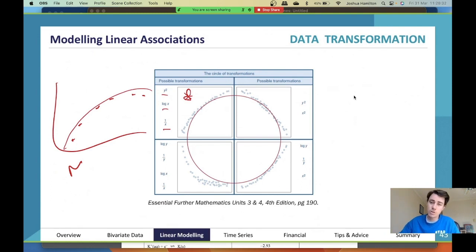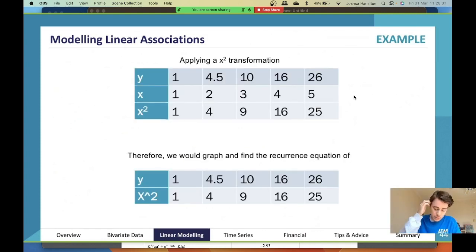How do I do that? Essentially it looks a little bit like this. You apply your transformation, so you go, 'Alright, I've got y, I've got x. I apply my x squared transformation. I've applied my x squared transformation; this is my new set of data.' I put that in my calculator.